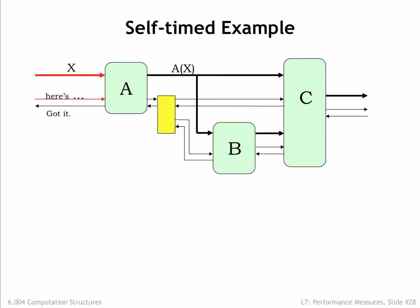At some point later, A signals got X back upstream to indicate that it has consumed the value, then the upstream stage deasserts here's X, followed by A deasserting its got X signal. This completes the transfer of the data to the A stage.